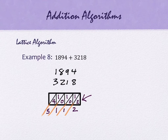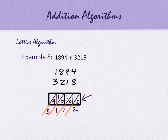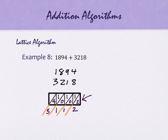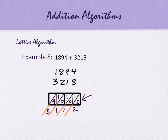A quick reminder: while we're working with different algorithms, if I ask you to use the lattice algorithm I expect to see a lattice. That doesn't mean you throw out your calculator or other algorithms. You should be able to check yourself with another method to verify you didn't make a mistake. If the answer isn't 5,112, go back and look for your error, or seek help.